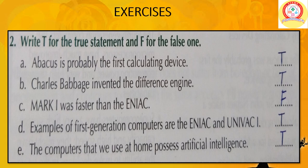Write T for true and F for false. A: Abacus is probably the first calculating device — True. B: Charles Babbage invented the Difference Engine — True. C: Mark I was faster than the ENIAC — False. D: Examples of first generation computers are ENIAC and UNIVAC 1 — True. E: The computers that we use at home possess artificial intelligence — True.